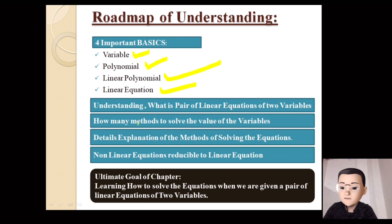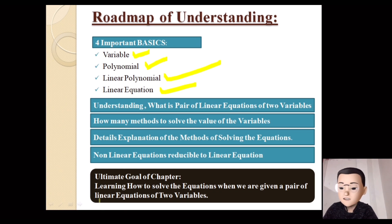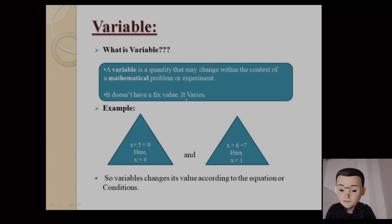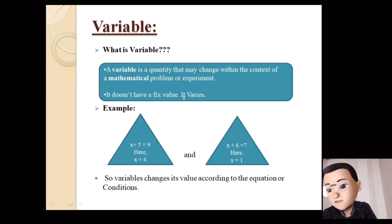There are two equations we need to work with. The ultimate goal is learning how to solve the equation when we are given a pair of linear equations of two variables. This is the main goal of this chapter, building on the basic concepts of variable, polynomial, linear polynomial, and linear equation.